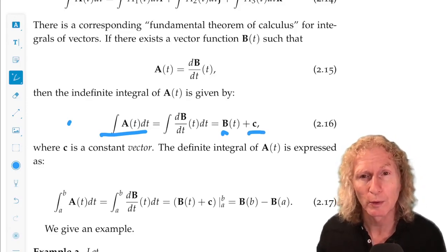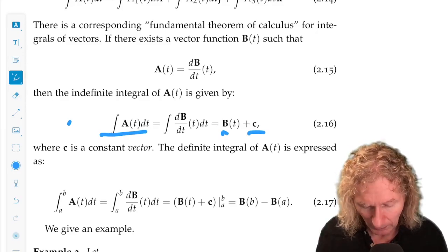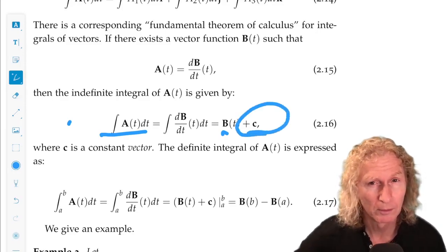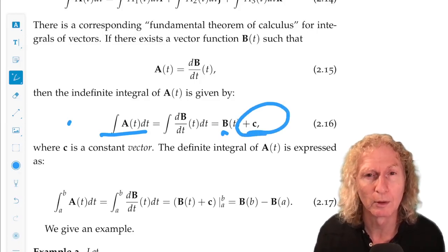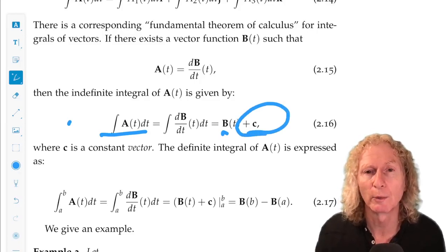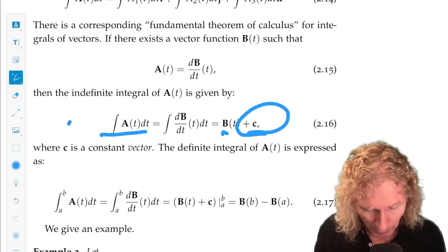Now, the very important thing to remember is this constant, c, is a vector, not just a number. We get a constant, a number, scalar, for each component. We add them together and express them in vector notation in this way.